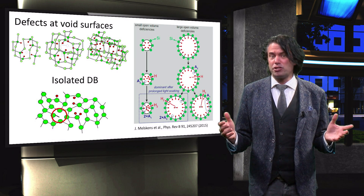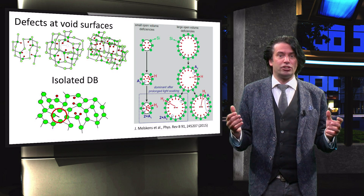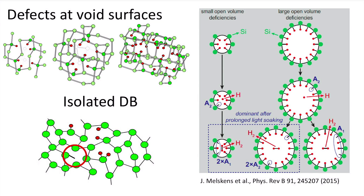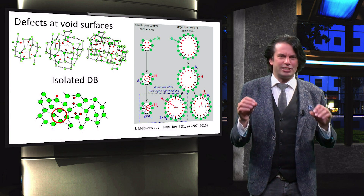It is believed that the local rearrangement of hydrogen bonded at the surface plays a role in this effect. In this figure you can see various routes in which defects can be created at the surface of volume deficiencies in the amorphous lattice. The volume deficiencies can have sizes similar to a vacancy up to nanosite voids. A defect is created when the covalent bond between a silicon and hydrogen atom is broken, with the energy of this reaction provided by the recombination of a light excited electron and hole. This leaves a dangling bond at the surface and an interstitial atomic hydrogen. One option is that two hydrogen atoms annihilate to form an interstitial hydrogen molecule. However, the origin of the kinetics of the light induced defects is still under discussion.